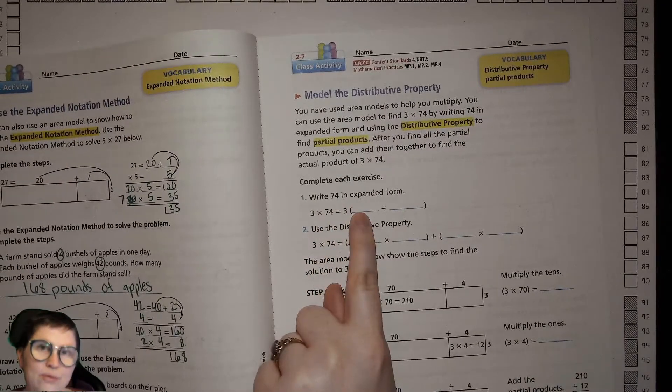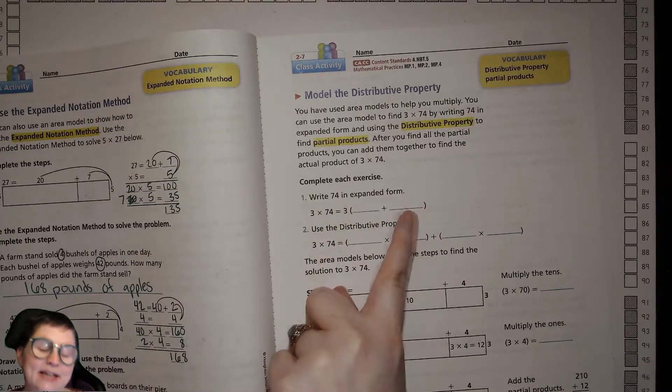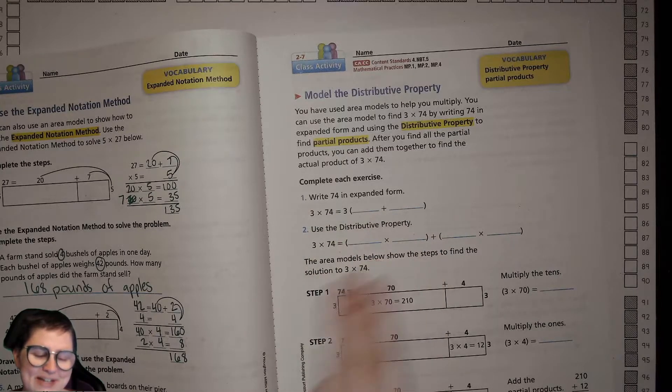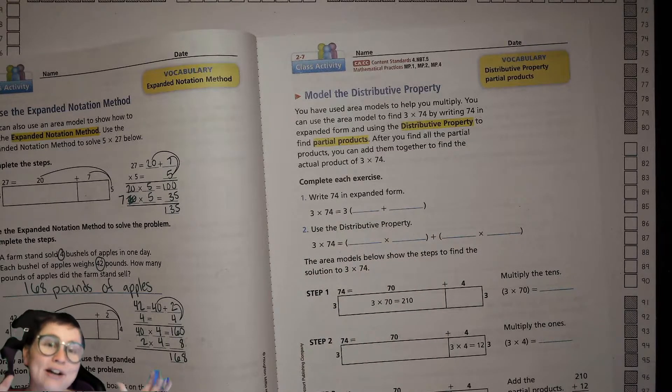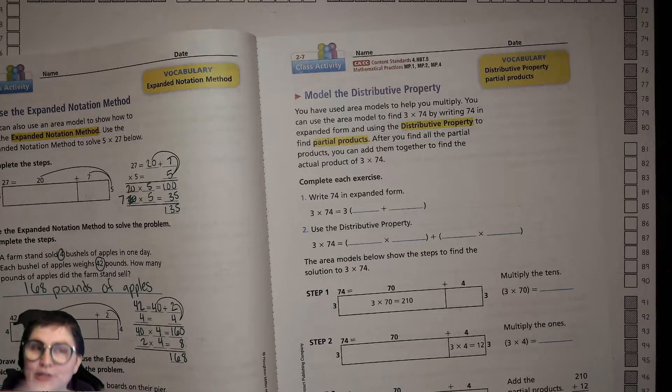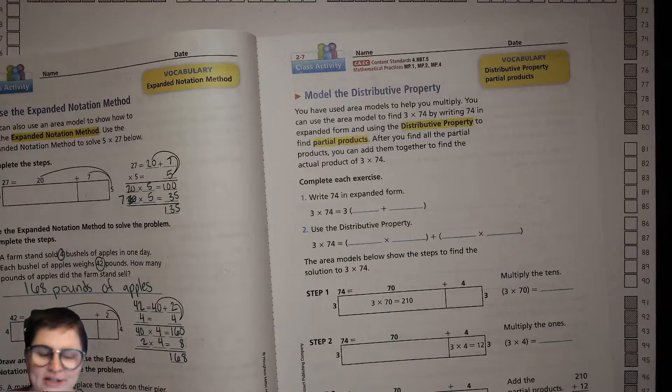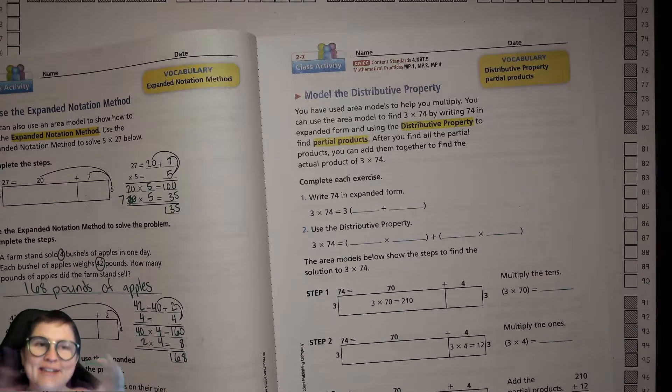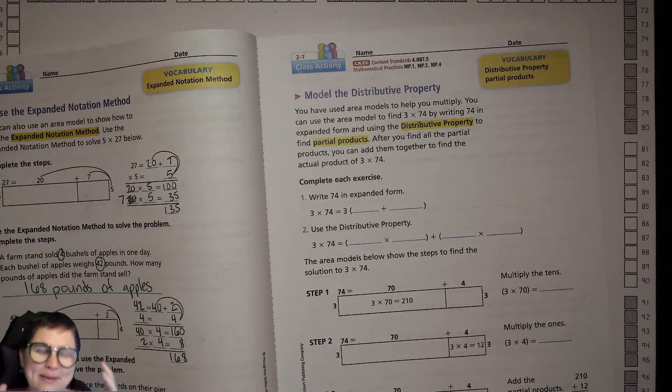When you do distribute it to one piece and another piece, each of those once you've done the multiplication, it's not the whole product because you haven't put them together yet. So it's called a partial product or a part of a product, and then when you put them together it's the actual product.